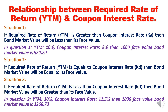Situation 3: If YTM is less than the coupon rate of interest provided by the company, the market value of the bond will be greater than the face value. In our second question, YTM was 10% while the coupon rate was 12.5% — greater than YTM. So the 2,000 face value bond had a calculated market value of 2,266.73, which is more than the face value. To summarize: if YTM > coupon rate, market value is less; if YTM = coupon rate, market value equals face value; if YTM < coupon rate, market value is greater.